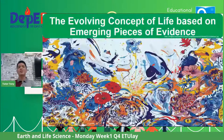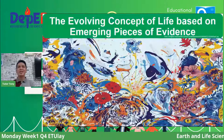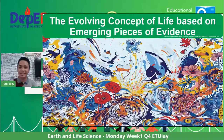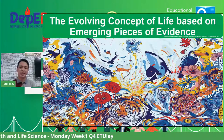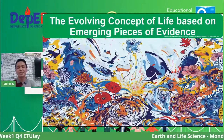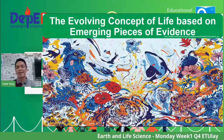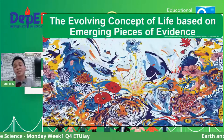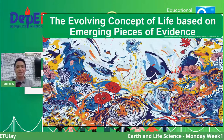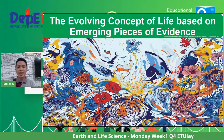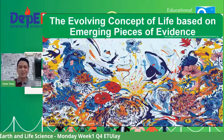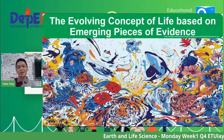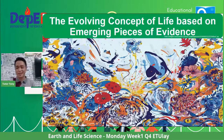We are now ready to discuss the evolving concept of life based on emerging pieces of evidence. From a single point, different life forms evolved — animals, insects, plants, and humans, even conquering space. How did life evolve? Where did it begin on planet Earth? Did it come from outer space, or did Earth become conducive for life to emerge and bloom? We'll find out.